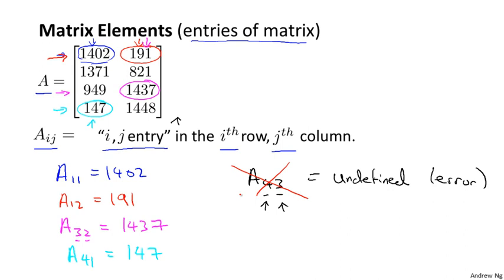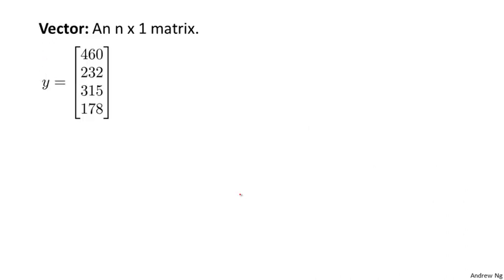So that's what a matrix is. Next, let's talk about what is a vector. A vector turns out to be a special case of a matrix. A vector is a matrix that has only one column. So if you have an n by one matrix...